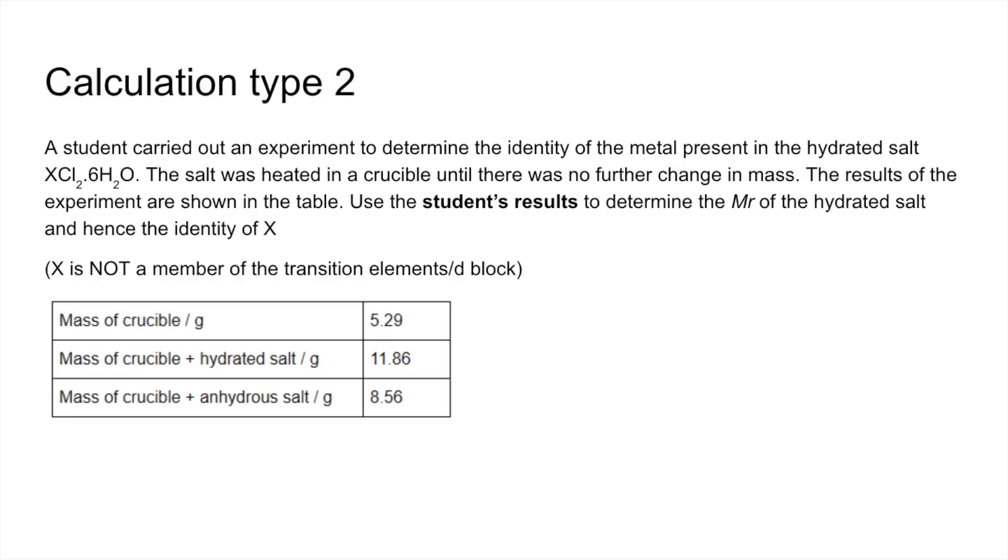Type 2 is a little bit different. The first thing I'm doing is working out the mass of the hydrated salt, anhydrous salt, and water. So the hydrated salt is obviously the crucible with hydrated salt minus the empty crucible, so that comes out at 6.57.